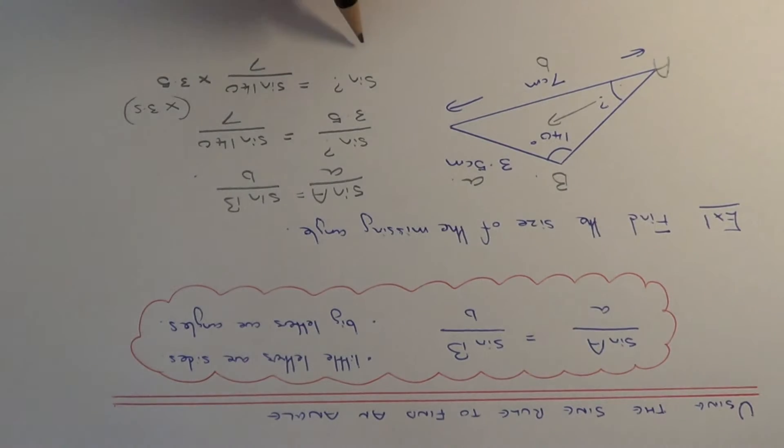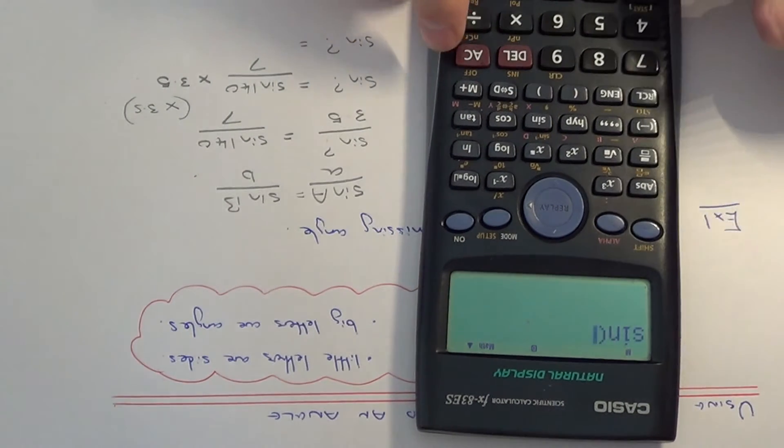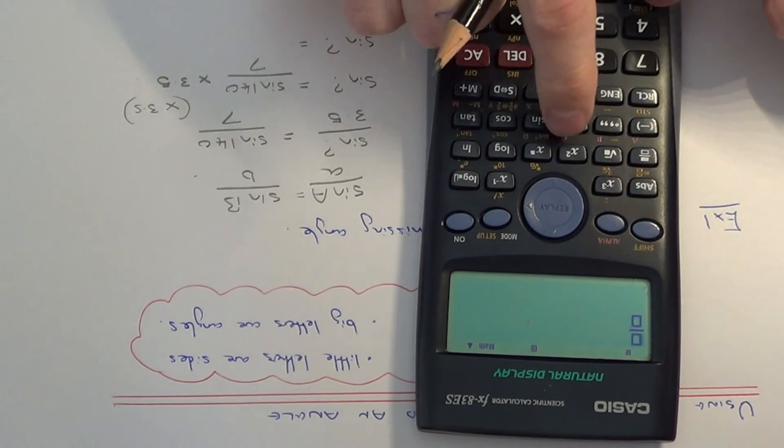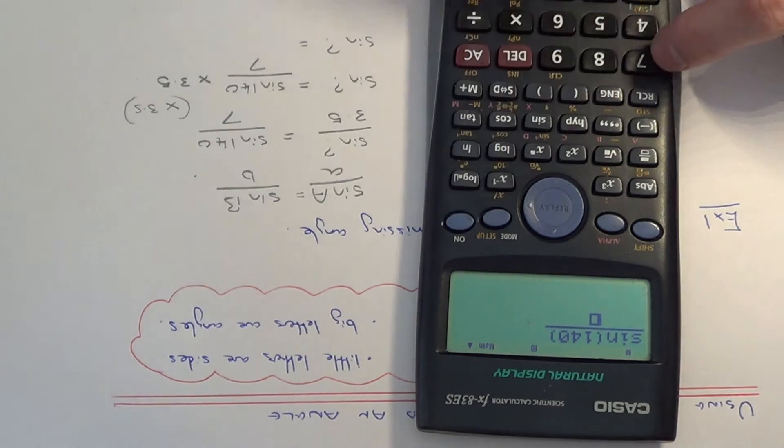We can type this in on our calculator now. We've got sin 140 over 7 multiplied by 3.5.